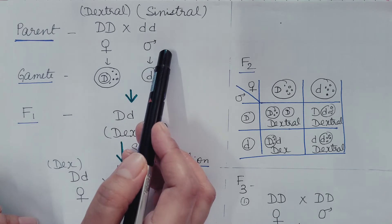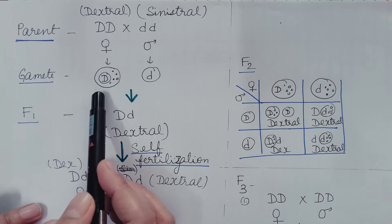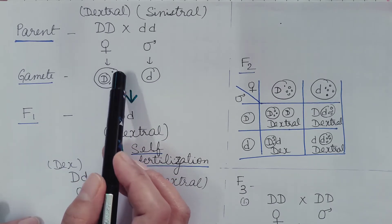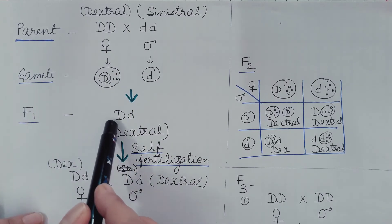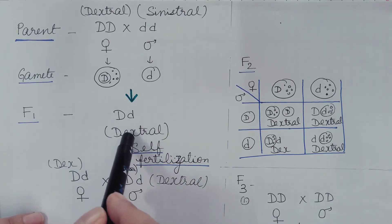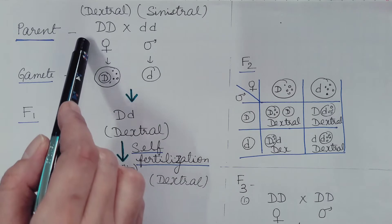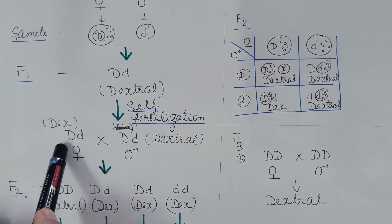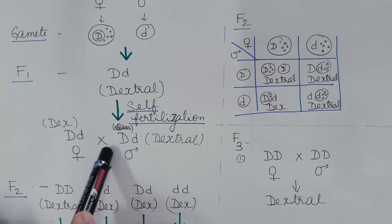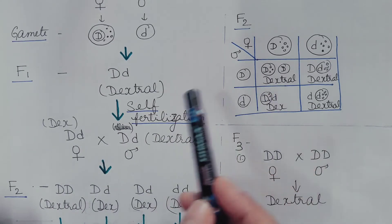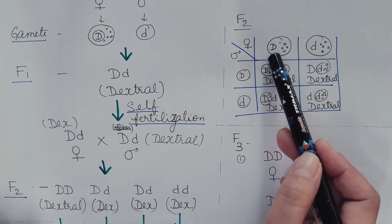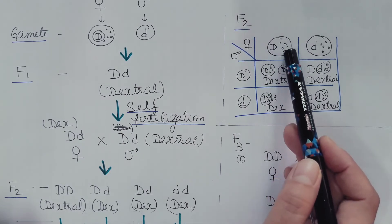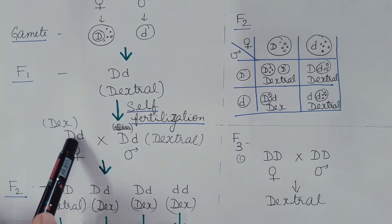A dextral female is crossed with a sinistral male. During gametogenesis, female and male gametes are produced. The female gamete has the cytoplasmic factor responsible for dextral shell coiling. In the F1 generation, all offspring are dextral, and the phenotype of this F1 generation is already decided depending upon the genotype of the mother, which is dextral. Now it is self-fertilized: the dextral F1 female (capital D, small d) is crossed with the dextral male. During gametogenesis, female gametes are produced with the cytoplasmic factor responsible for dextral shell coiling, because the mother's genotype is capital D, small d.